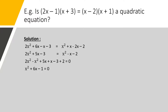On the LHS: 2x into x gives 2x squared; 2x into plus 3 is plus 6x; minus 1 into x is minus x; minus 1 into plus 3 is minus 3. On the RHS: x into x is x squared; x into plus 1 is plus x; minus 2 into x is minus 2x; minus 2 into plus 1 is minus 2.